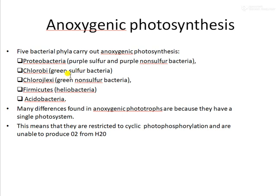In anoxygenic photosynthesis, five different bacterial phyla are mainly involved: the Proteobacteria, involving the purple sulfur and purple non-sulfur bacteria; the Chlorobi, involving the green sulfur bacteria; the Chloroflexi, involving the green non-sulfur bacteria; the Heliobacteria; and the Acidobacteria. The key difference is that it involves a single photosystem, does not involve oxygen, and is restricted to cyclic photophosphorylation, being unable to produce oxygen from water.